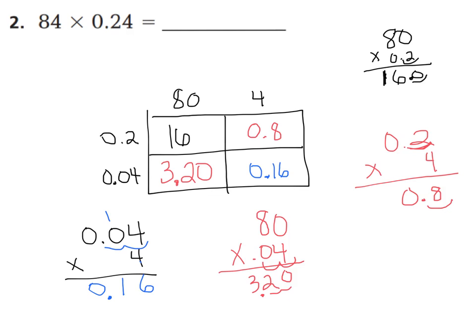Go ahead and find a spot in your GoMath book or on a notebook paper to show your work. We have 16 wholes, plus 3 and 20 hundredths, plus 8 tenths, plus 16 hundredths. I like to make them all go to the same place value when I add, to make it easier. My hundredths place should have a 6. My tenths: 8 plus 2 plus 1 is 11 tenths — regroup to get 1 whole and 1 tenth. Drop your decimal. 6 plus 1 plus 3 more is 10 wholes — regroup. Our final product is 20 and 16 hundredths.